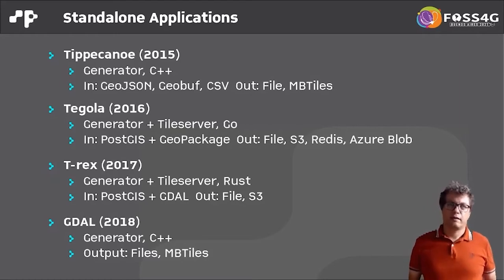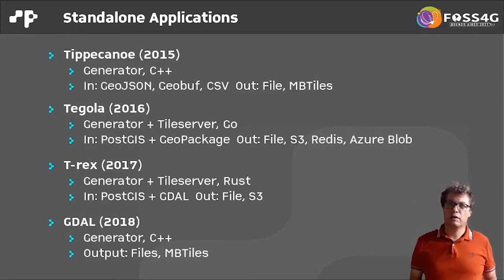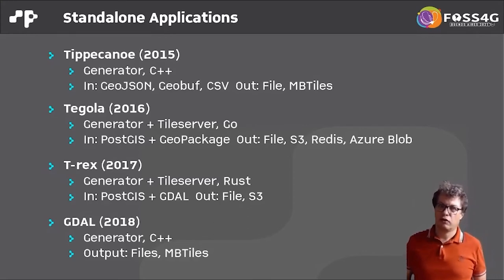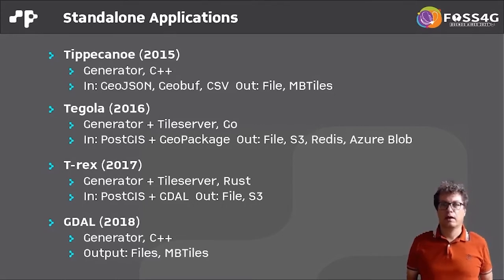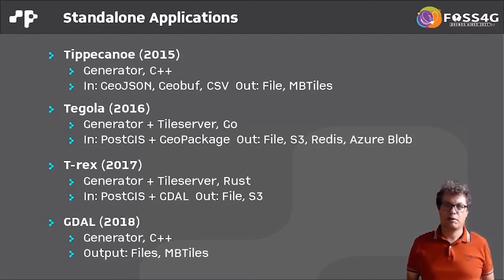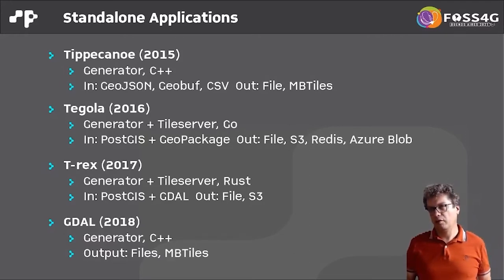The next one is Tegola, published in 2016, written in Go. It is both a generator and a tile server, meaning you can serve live-generated tiles. As a source it supports PostGIS and also GeoPackage, and has many output formats including PBF files, S3 storage, Redis, and Azure Blobs. It supports Web Mercator and also WGS 84 as output projection.